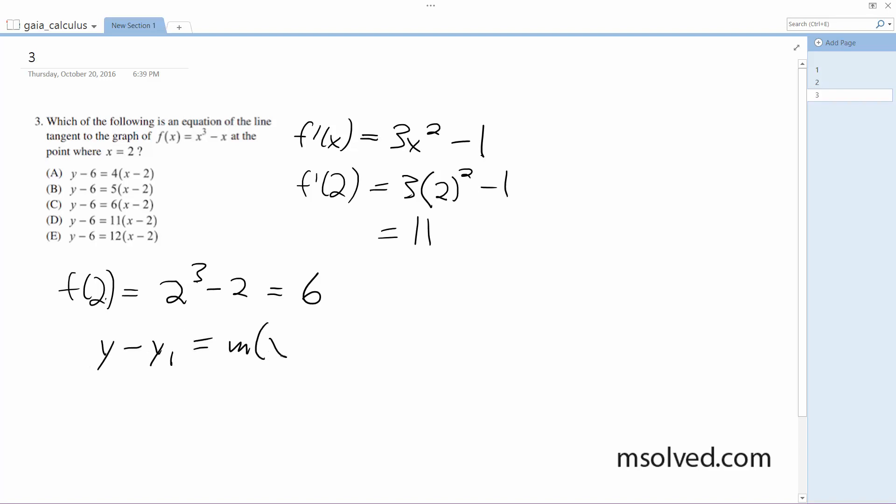So what we end up here with is y minus 6, which I got right here, is equal to our slope which is 11 times x minus 2, which is the point we were given.